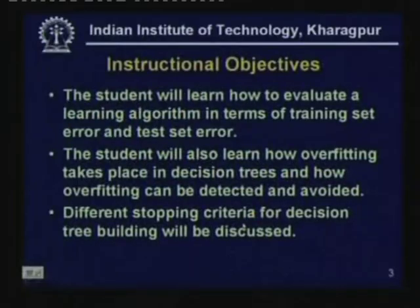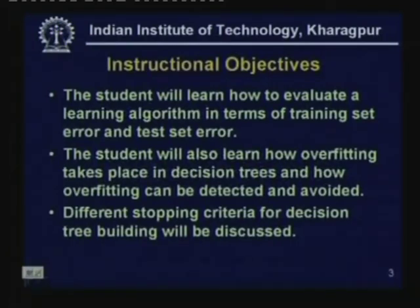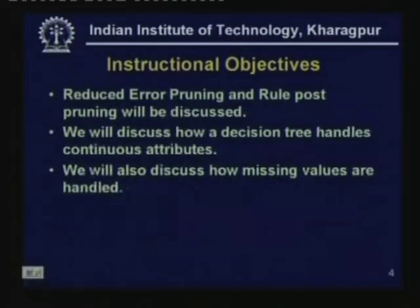The instructional objectives of today's lecture are as follows. The student will learn how to evaluate a learning algorithm in terms of the error obtained on the training set and the error obtained on the test set. The student will learn how overfitting takes place in decision trees and how overfitting can be detected and avoided. We will talk about different stopping criteria for decision tree building. We will look at two different pruning techniques: reduced error pruning and rule post pruning.